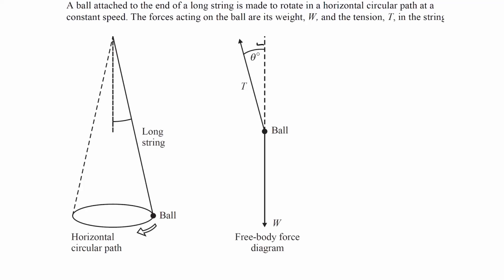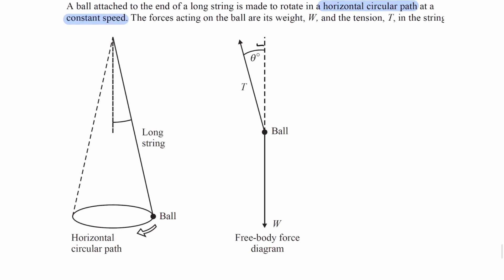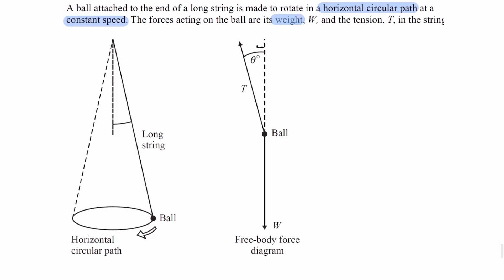A ball attached to the end of a long string is made to rotate in a horizontal circular path at a constant speed. The forces acting on the ball are its weight and tension as shown in the diagram, so we see weight going straight down, tension at an angle parallel to the string. We see the horizontal circular path of the ball as well.